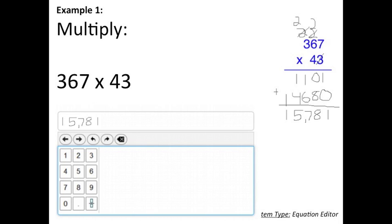So example one says multiply 367 times 43. You can see that over in the right-hand corner, I have written 367 times 43, but I've written it vertically this time because that's how we solve it using standard algorithm, which is the regular old-fashioned way to solve a multiplication problem.